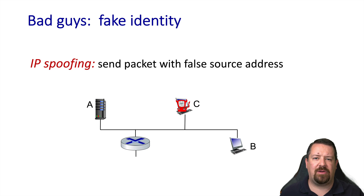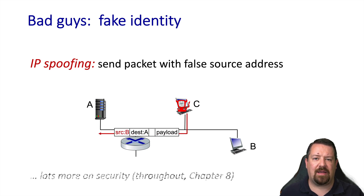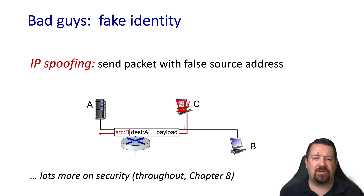Something else that an attacker may do is spoof a source IP address. In this case, host C is sending a packet to A with a spoofed address that belongs to B. This may cause host A to send traffic back to B that B never solicited, and could be a component of a denial of service attack.